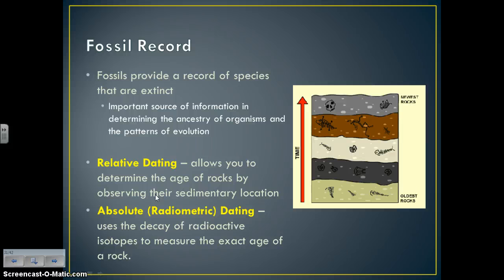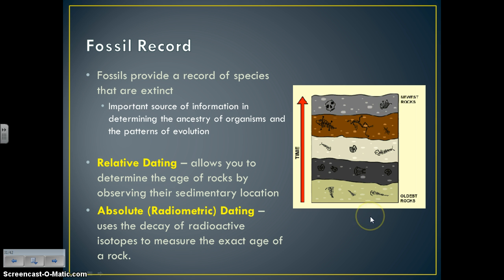There are two ways to date fossils. Relative dating allows you to determine which fossil is older based on its location in the sediment — the oldest fossils are in the lower rocks, newer species near the upper surface. Absolute or radiometric dating uses the decay of radioactive isotopes to measure the exact age of a rock, such as carbon dating to determine a fossil was 50 million years old.